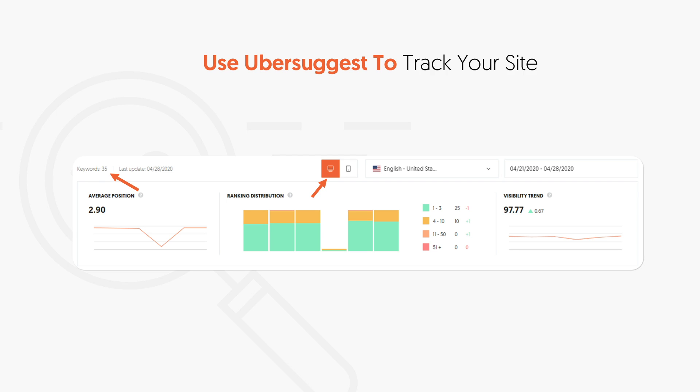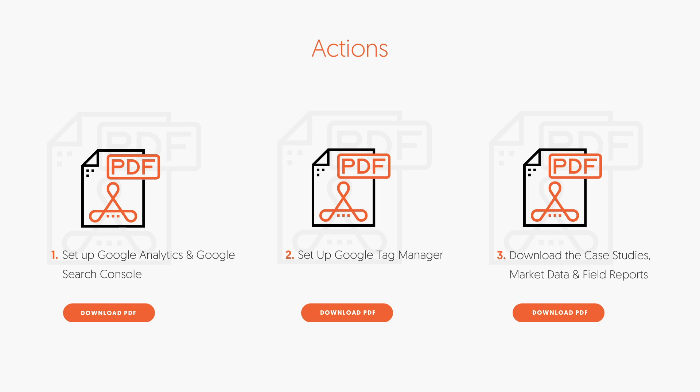Last but not least, I want you to set up tracking on Ubersuggest. In Ubersuggest, go to the dashboard, put in your URL, put in the keywords you want to rank for — the ones you got from Search Console. Ubersuggest connects with your Search Console so it'll automatically plug them in if you don't know them. Select the ones you want, and check your mobile and desktop rankings over time to track your rankings. Also, download and leverage the worksheets and templates, which break everything down step-by-step — from setting up Google Analytics, to Search Console, to Tag Manager, to making your posts and content stand out. You can find all of this at neilpatel.com/training, Content Marketing Unlocked, Week 3, Lesson 3.